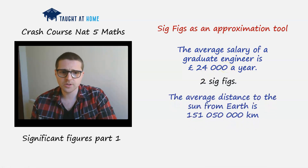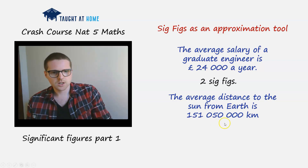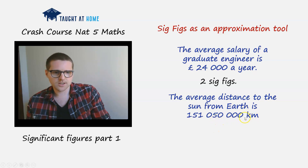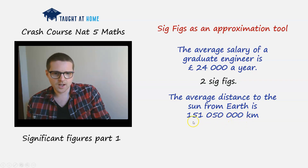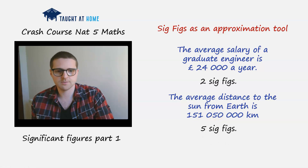The average distance from the Earth to the Sun is approximately 151,050,000 km. The trailing zeros tell us the position of the decimal point, so they are non-significant. Everything else is significant, including the zero between the 1 and the 5. So there are five significant figures here.